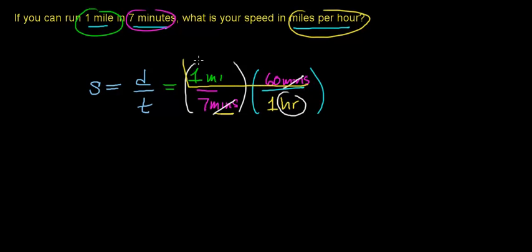So when you multiply the terms in the numerator, you're going to get 60 miles. And then you're going to divide that by the terms in the denominator, which will be seven hours.